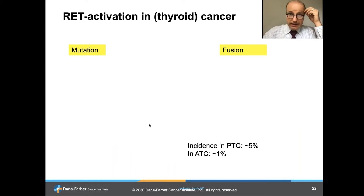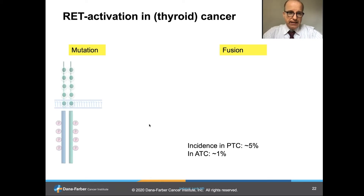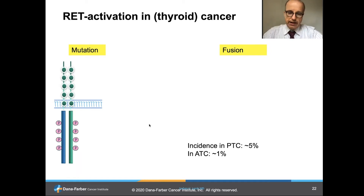RET activating abnormalities are quite frequent in thyroid cancer, essentially through two mechanisms. Mutations occur predominantly in medullary thyroid cancers, where they lead to dimerization of the RET proto-oncogene and thus activation.